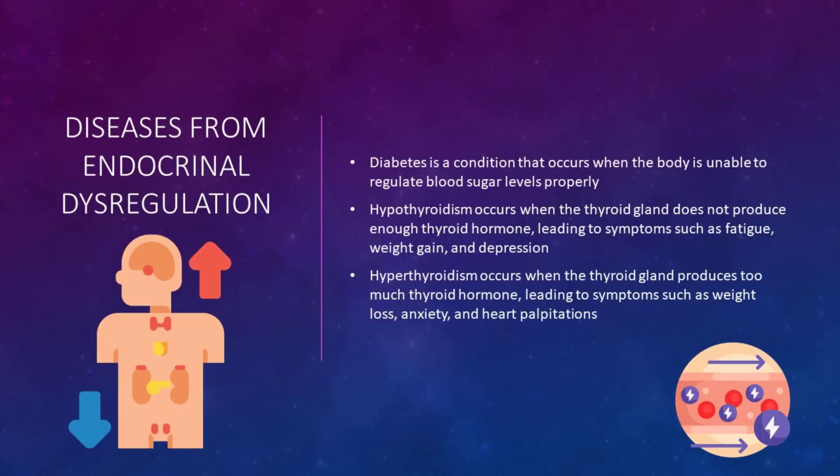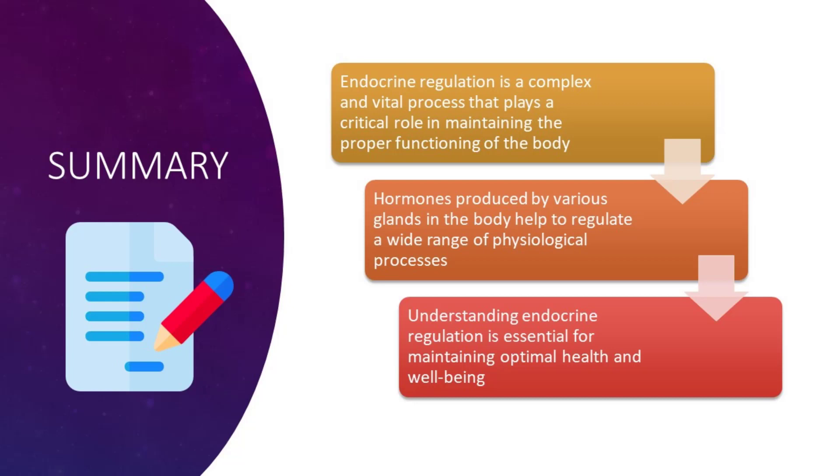Diseases from endocrine dysregulation. For example, diabetes is a condition that occurs when the body is unable to regulate blood sugar levels properly. This can be due to a lack of insulin production by the pancreas or a resistance to insulin by the body's cells. Another example of endocrine dysfunction is thyroid disease. Hypothyroidism occurs when the thyroid gland does not produce enough thyroid hormone, leading to symptoms such as fatigue, weight gain, and depression. Hyperthyroidism occurs when the thyroid gland produces too much thyroid hormone, leading to symptoms such as weight loss, anxiety, and heart palpitations.